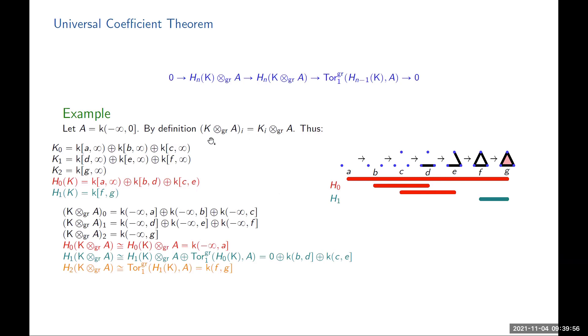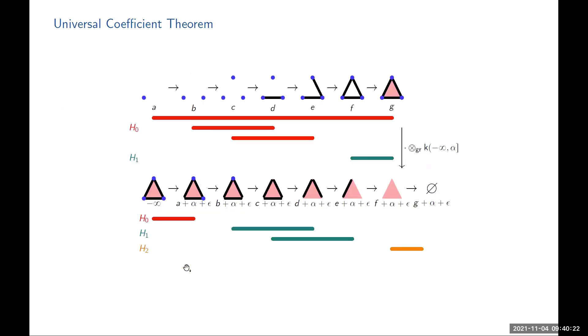Now, suppose you change coefficients. Suppose you tensor this complex by some other module, let's say this one for example, negative infinity to zero. Then, according to the formulas I had in the previous slide, your complex changes like this. You might be wondering, what's the homology of this complex? Well, that's why we have the Künneth theorem. We can just use the Künneth theorem to compute it, and we get that it's equal to this. On the next picture, it looks like this.